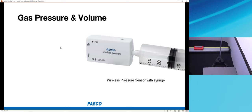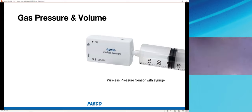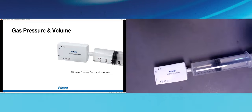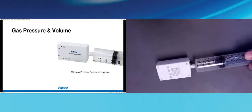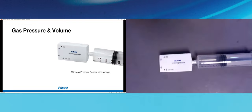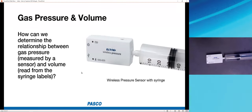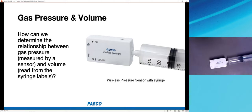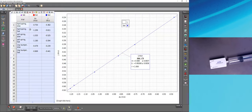For the final activity, I have a wireless pressure sensor with a syringe attached, filled with about 30 milliliters of room-temperature air. I'd like to determine the relationship between gas pressure and volume. The pressure sensor provides the pressure reading, but the volume must be read from the syringe markings and entered manually — so we need to correlate user-entered volume data with sensor-measured pressure data.